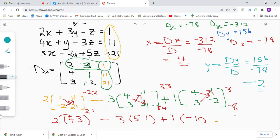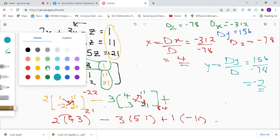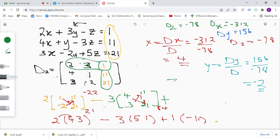Then finally for z, z equals dz over d. dz is negative 78 divided by negative 78, so z equals 1.